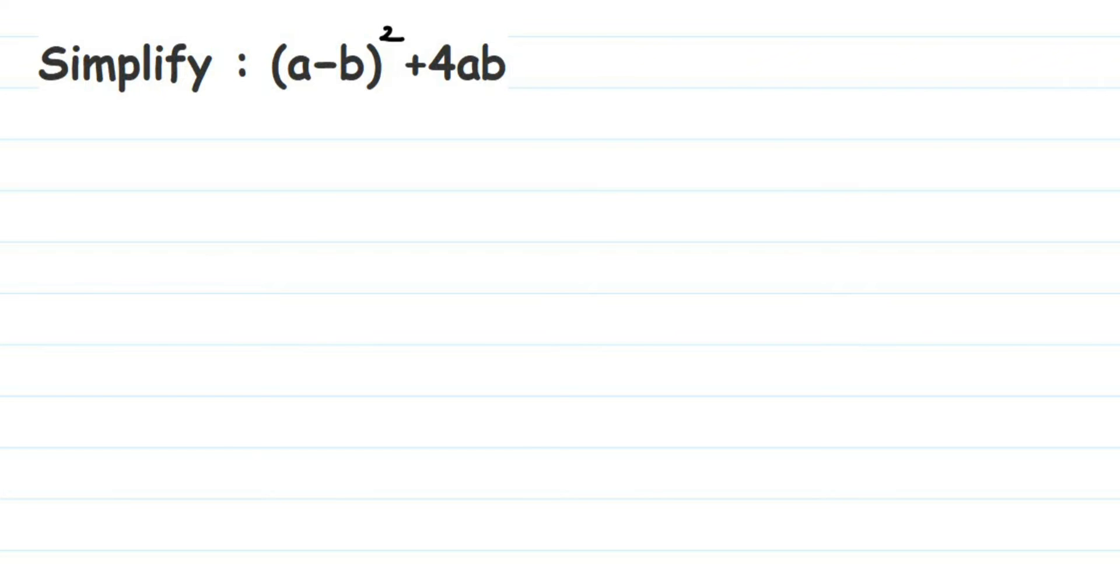Hey everyone, here's a question on algebraic expression. The question is: simplify (a - b)² + 4ab. To simplify means we have to solve it and bring it to the reduced form, the stage where you cannot simplify further. So let us start with the question.